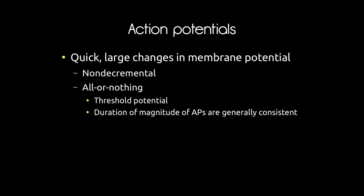Moving on from graded potentials, we now talk about action potentials — the bread and butter of what the nervous system does. Action potentials are quick, large changes in membrane potential. Unlike graded potentials, they are non-decremental — they do not lose magnitude as they travel along the membrane. They are also all-or-nothing: either an action potential happens or it doesn't; there's no such thing as a small or large action potential.